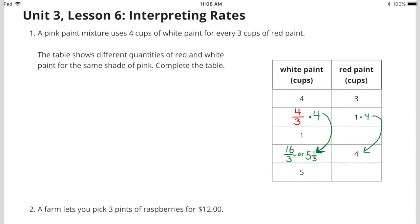You notice the 4 in the red paint column. I already have 1 cup, so I can multiply that 1 cup by 4 to get 4 cups of red paint. Next, I'd have to multiply 4 thirds times 4 to get 16 thirds. 16 thirds is also equal to 5 and 1 third.